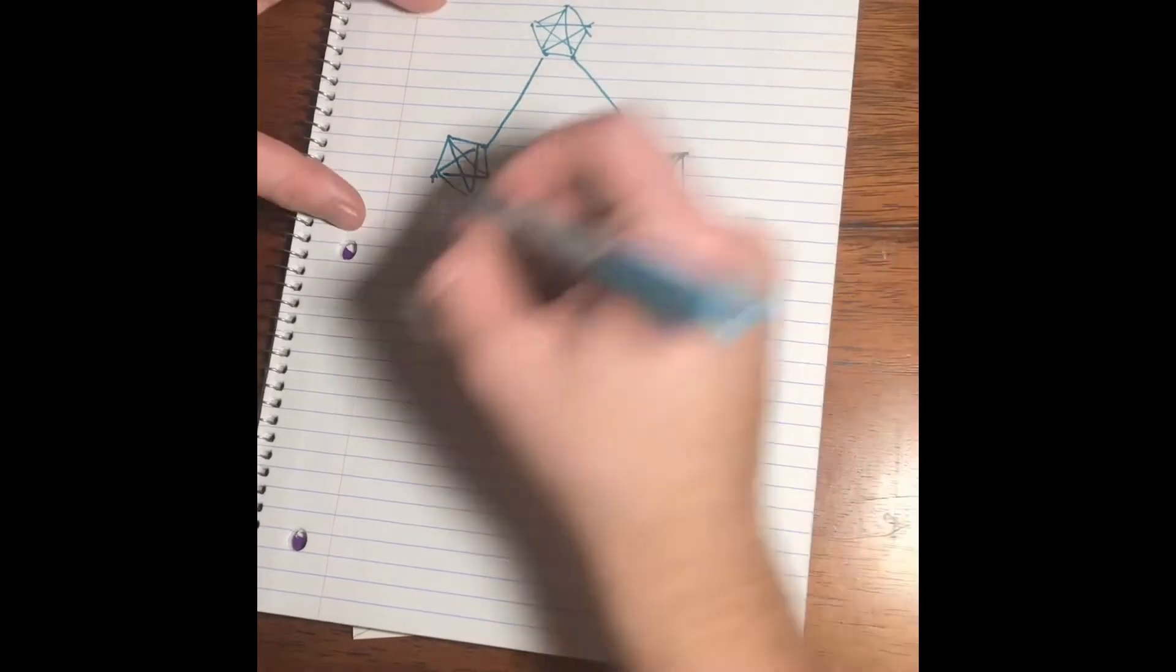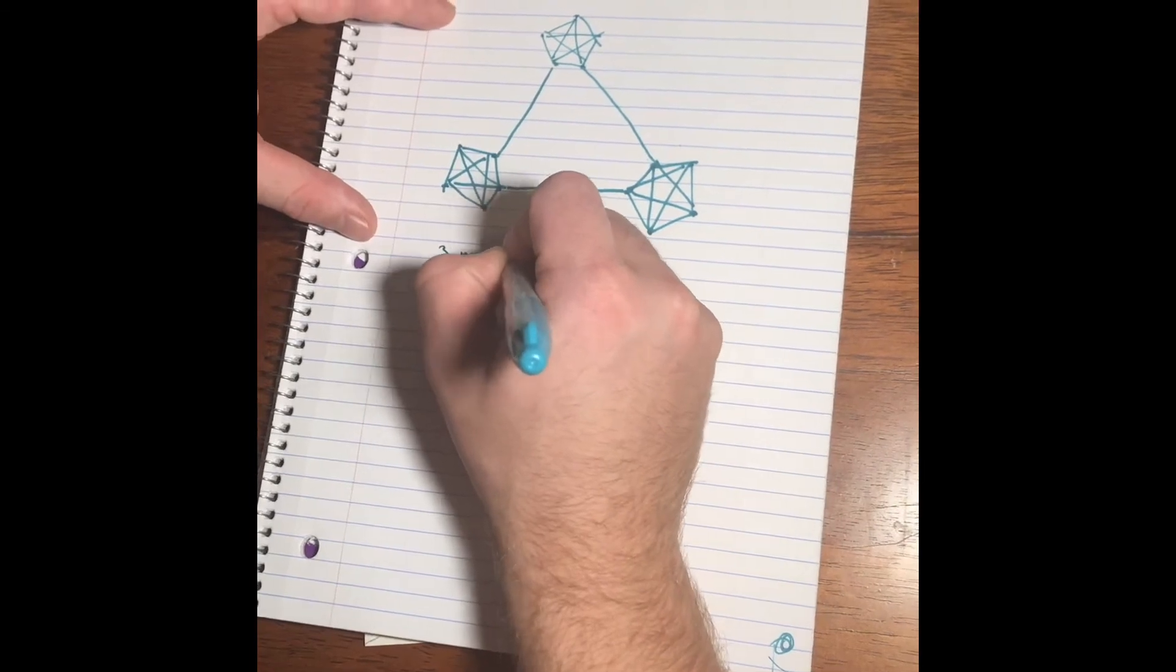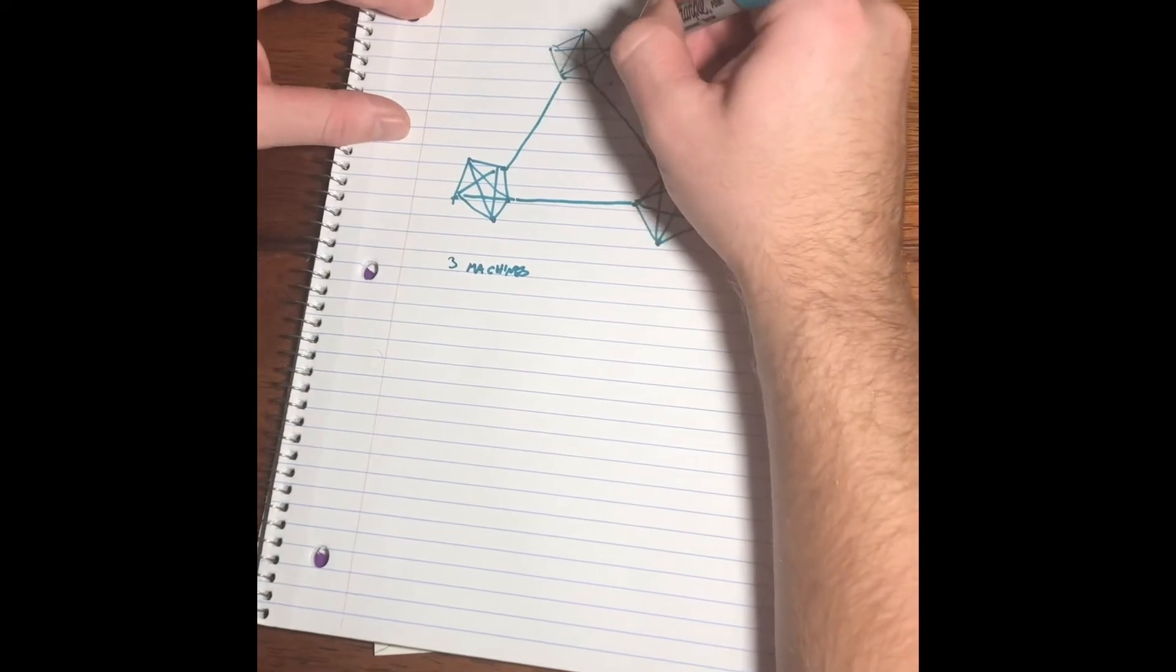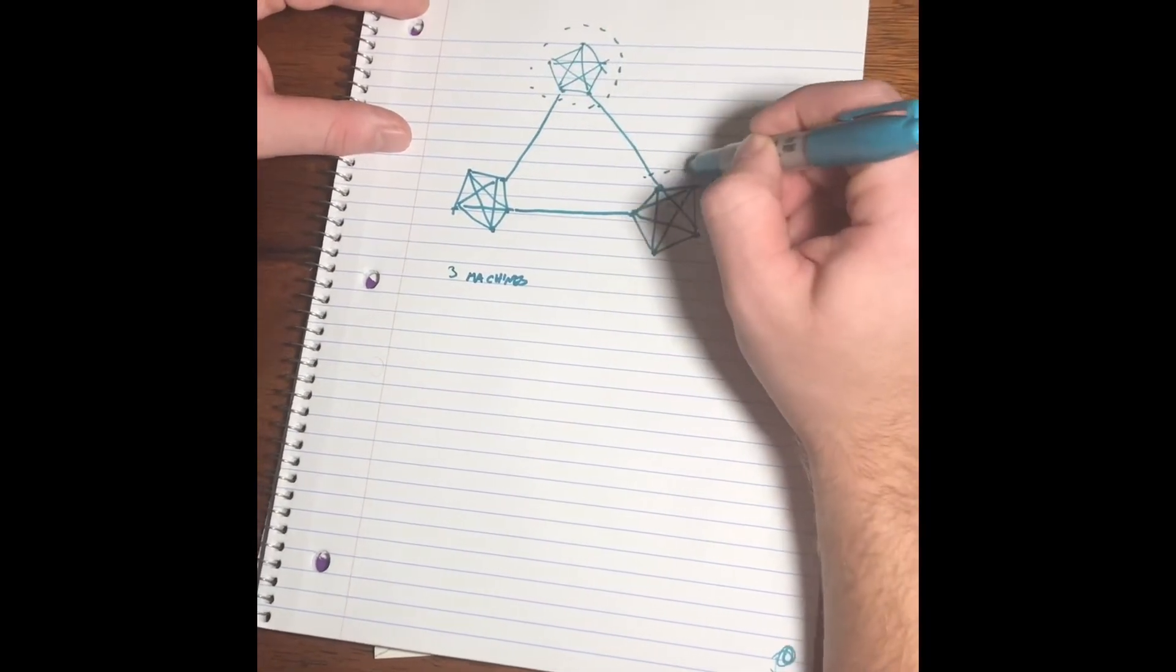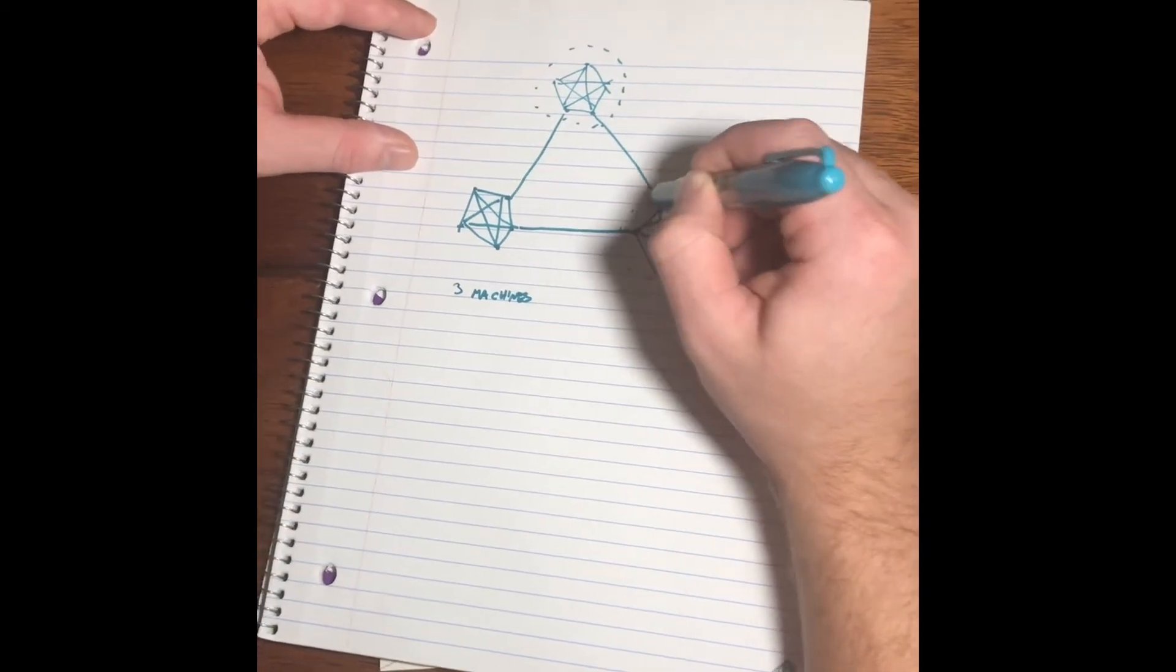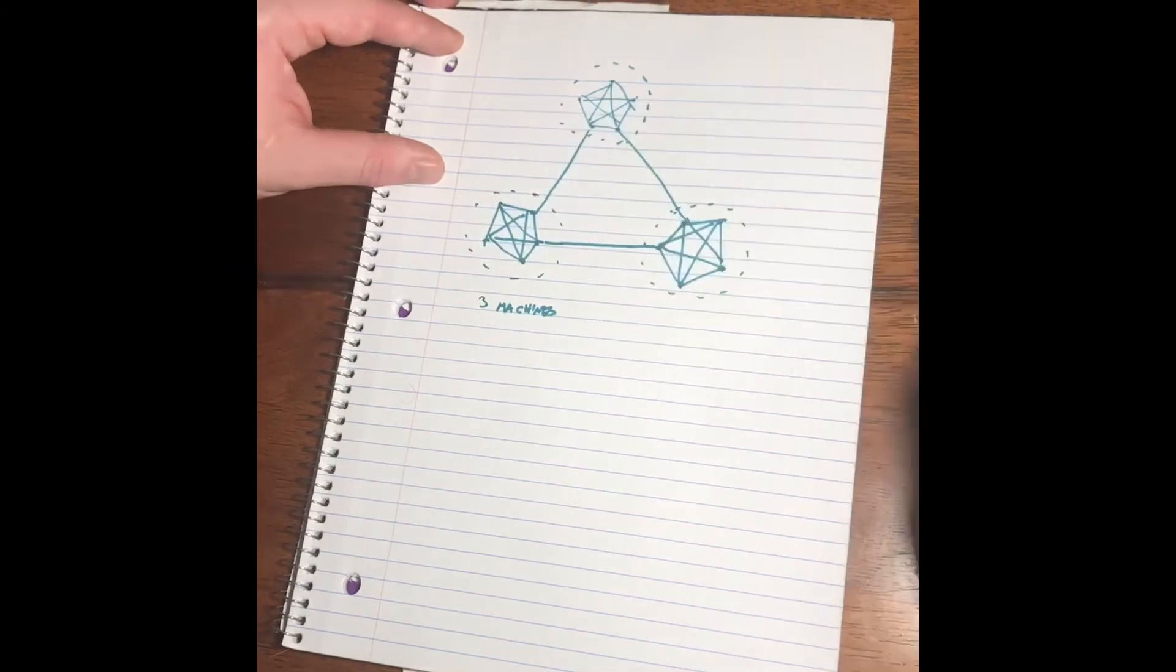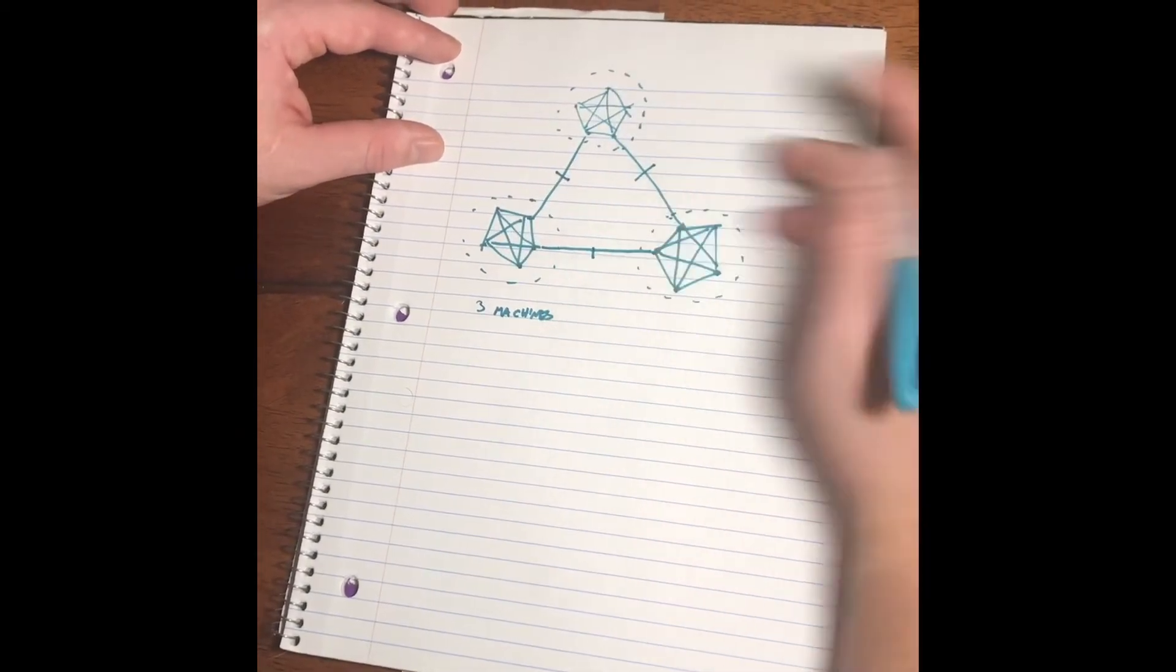So if we have three machines, then we might see that it's easiest to divide our program into machine one, machine two, and machine three, where we have edge cuts here, here, and there.